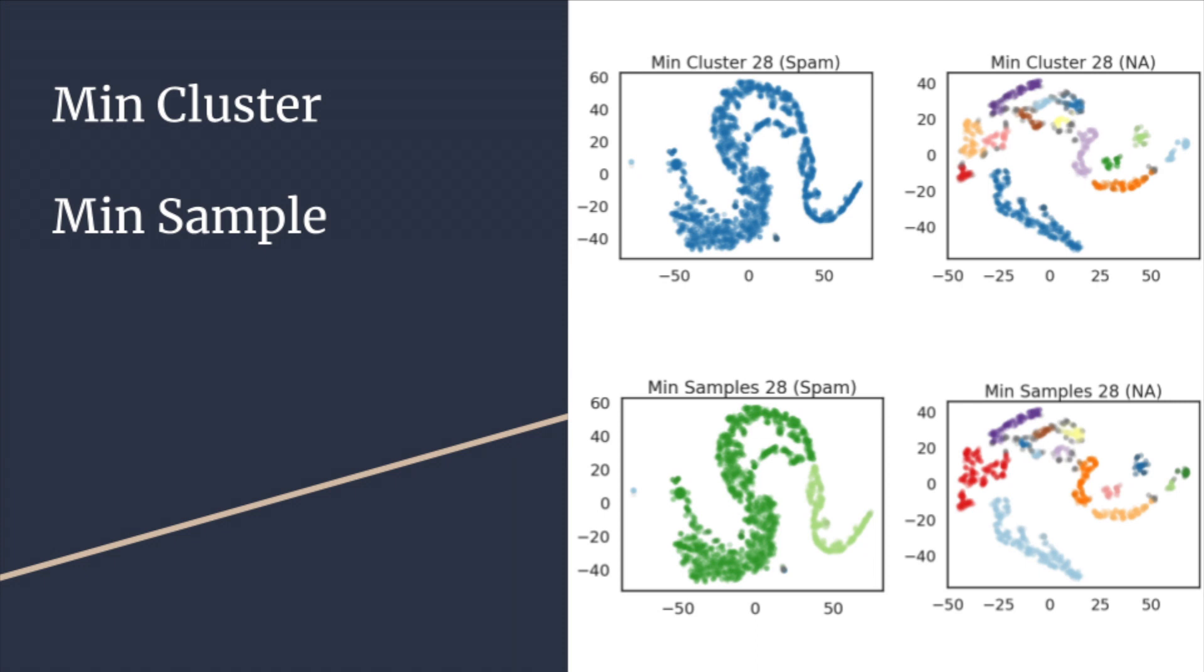The min-cluster size tells the HDBScan algorithm the number of points required to form a cluster. As we can see above, setting this parameter to 28 allows there to be far fewer clusters, only one in the spam graph, as opposed to 15 in our non-spam graph. We also see something similar with the min-sample parameter. When we set that to 28, min-sample is basically telling HDBScan how many points to have located around each core point. Above, we notice that again there are far fewer clusters identified in the spam subset.